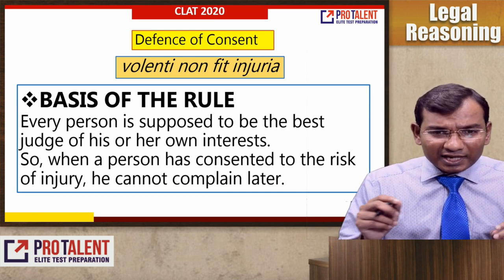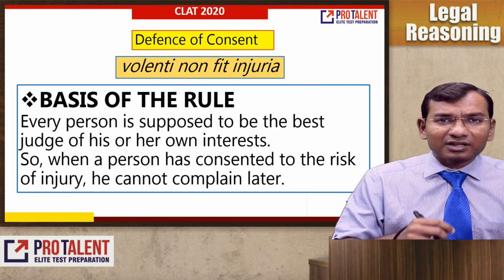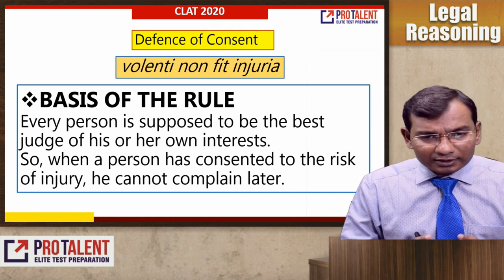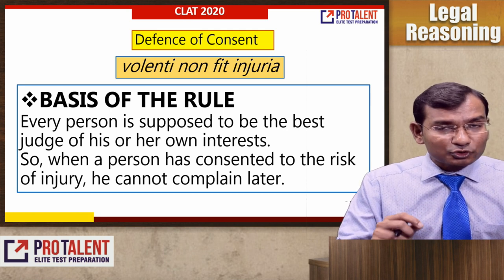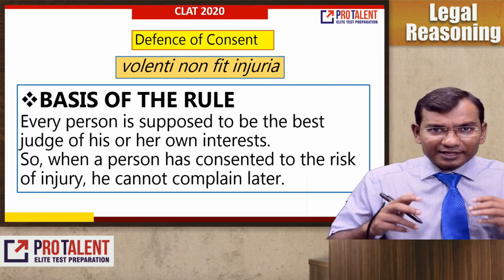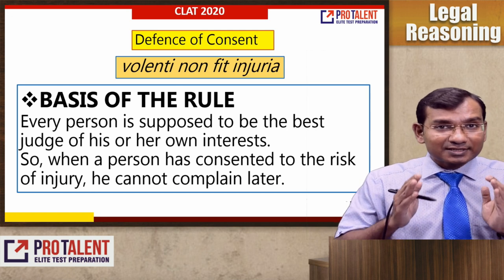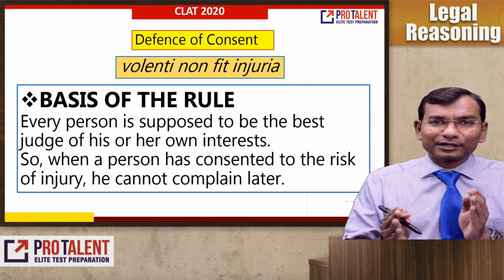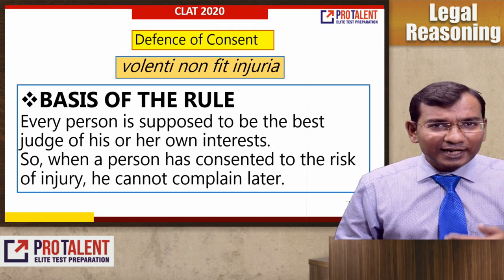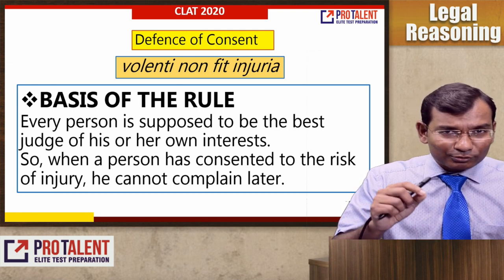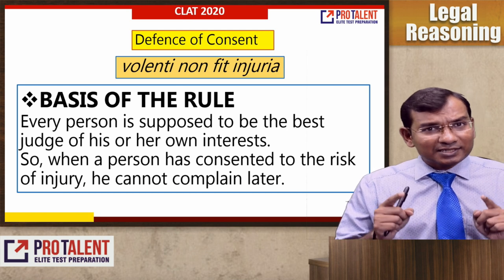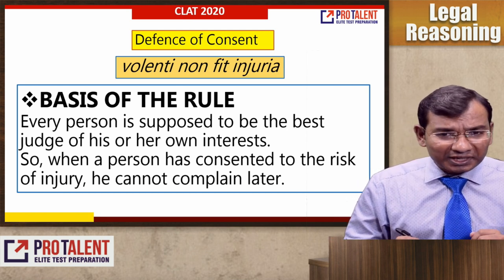Volenti Non Fit Injuria is a Latin maxim saying that one who voluntarily comes to the injury — that is not called a legal injury. The basis of this rule is that every person is supposed to be the best judge of his or her own interest. He is the best judge and if he is consenting to a risk, he cannot complain at a later stage. If you have done something of your own consent and suffered harm as a result, then you are responsible — not the other party.